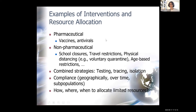For interventions, we can put them into two big categories. Pharmaceutical interventions, such as vaccines and antivirals, usually do not become available early on for a new infectious disease like COVID, though they are available for diseases that have been around a long time. Non-pharmaceutical interventions are primarily behavioral — school closures, travel restrictions, voluntary physical distancing, wearing masks. We could also think about combined strategies such as testing, tracing, and isolation. By themselves they may have limited effectiveness, but when combined they are very impactful.